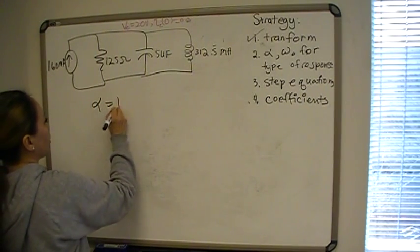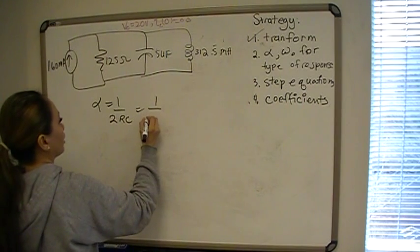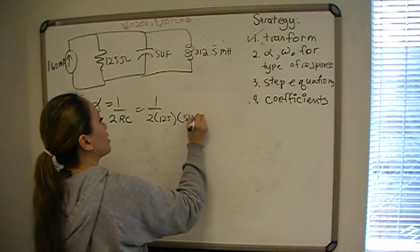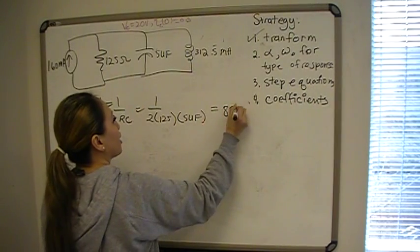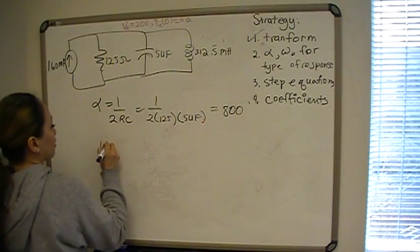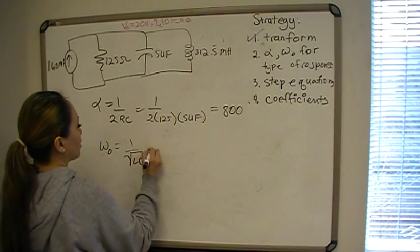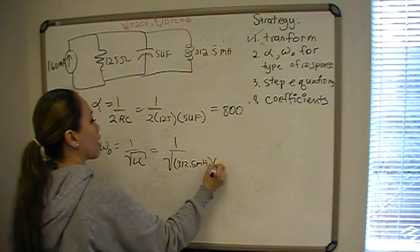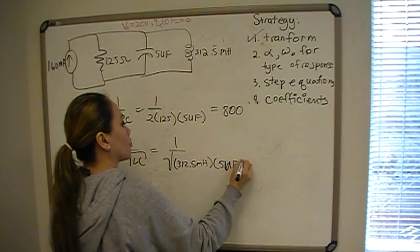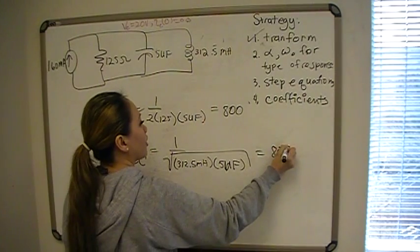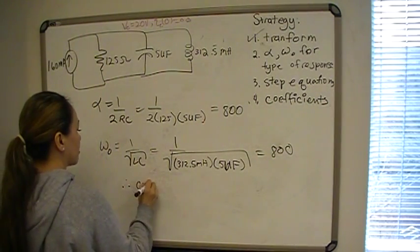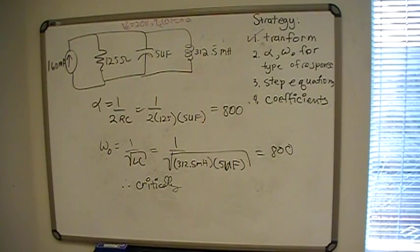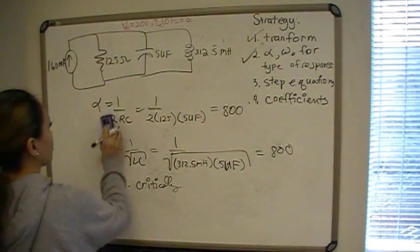Alpha is 1 over 2RC, which is 1 over (2 × 125 ohms × 5 microfarads), giving 800 radians per second. Omega naught is 1 over the square root of LC, which is 1 over the square root of (312.5 millihenries × 5 microfarads), also giving 800 radians per second. Since alpha equals omega naught, the system is critically damped. Now we know what type of response we have and what the step equations will be.